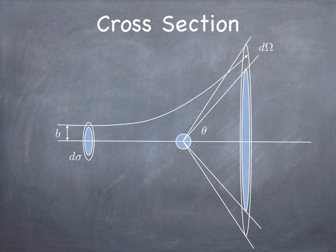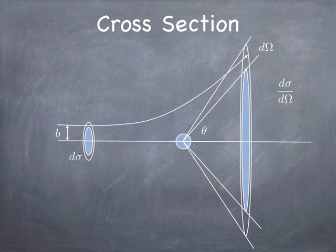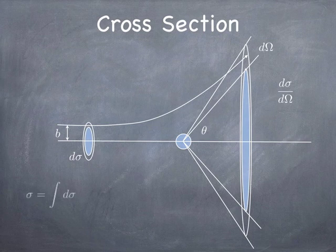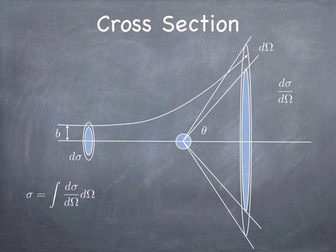And one thing that we're going to be interested in is the ratio of d-sigma, the incoming transverse cross-section that the incoming particle sees, divided by d-omega, the solid angle into which that particle is scattered. That is actually called the differential cross-section. The total cross-section is the integral of all the d-sigmas, for which there is any scattering at all. And of course, we can replace d-sigma with d-sigma d-omega, do a change of variables, and integrate over d-omega.